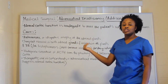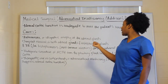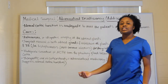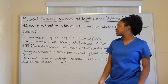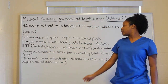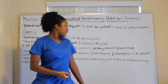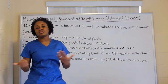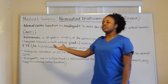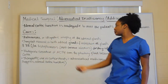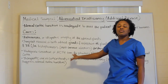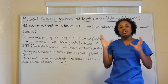Other causes include surgical removal of both adrenal glands and infection of the glands. The main infections that may cause Addison's disease are tuberculosis (TB) or histoplasmosis. These infections destroy the adrenal gland tissues.